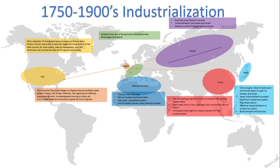Then we go to China. China started the Self-Strengthening Movement to protect their culture by modernizing; however, this largely failed when Japan beat China in the Sino-Japanese Wars. China then issued 100 Days of Reform, where it started to industrialize rapidly. China gave all its trade rights to western powers in return for help in modernization.